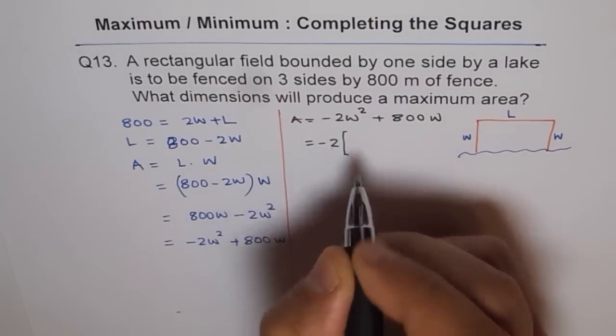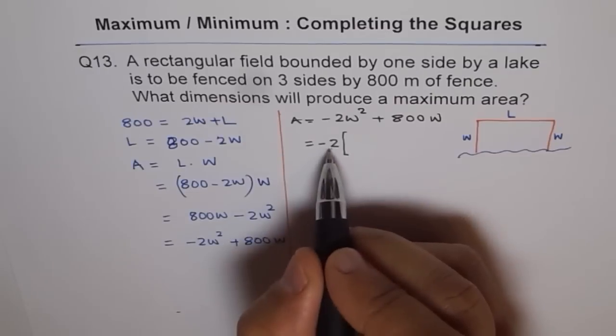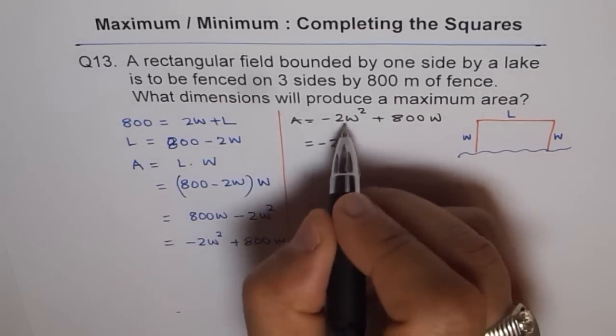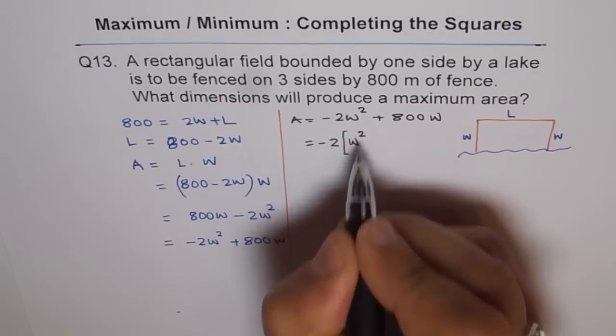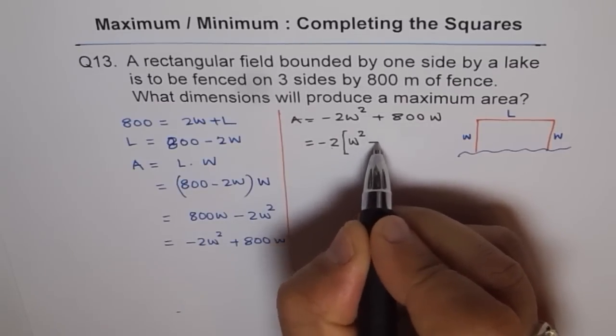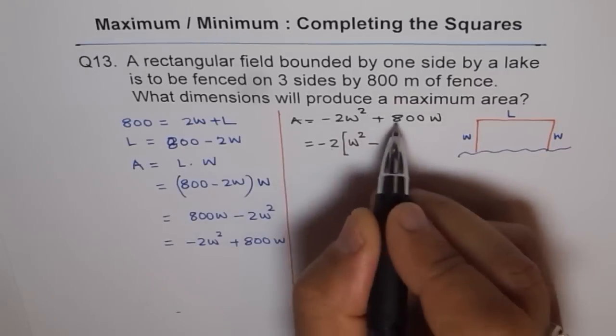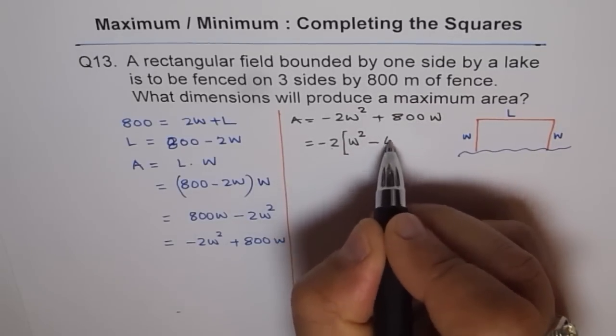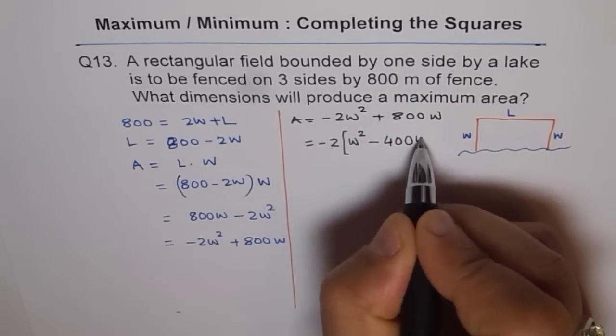Factoring means you have to divide both by minus 2. So when you divide this by minus 2, you are left with W square with leading coefficient 1 now. That was the idea. Minus plus divide by minus is minus. 800 divided by 2 is 400. 400W.